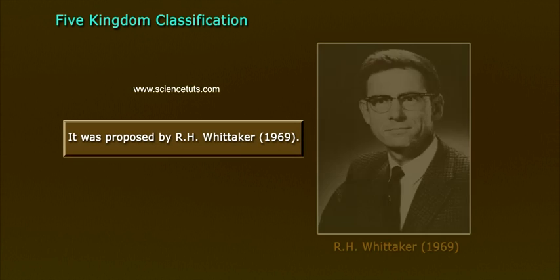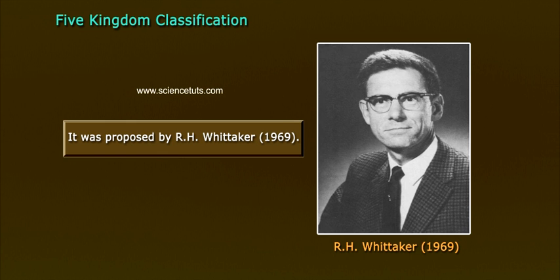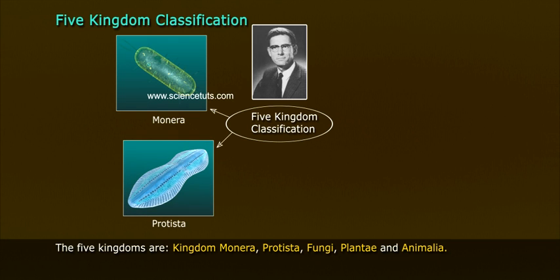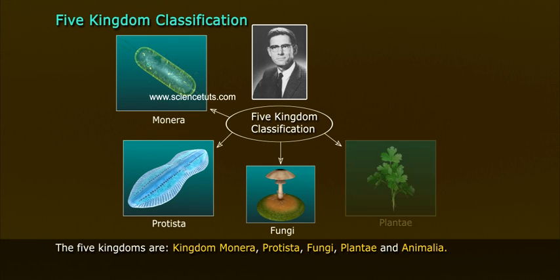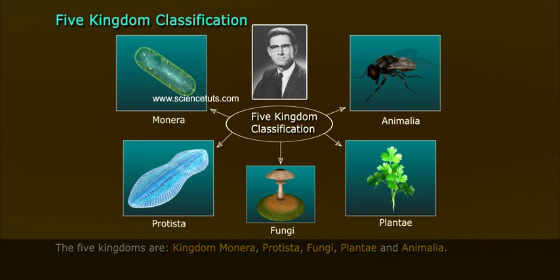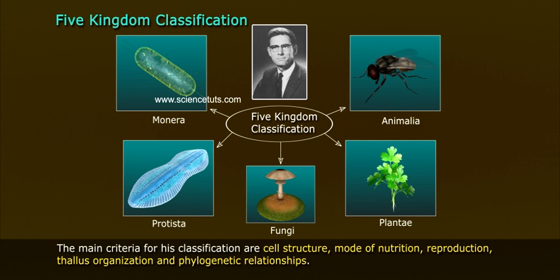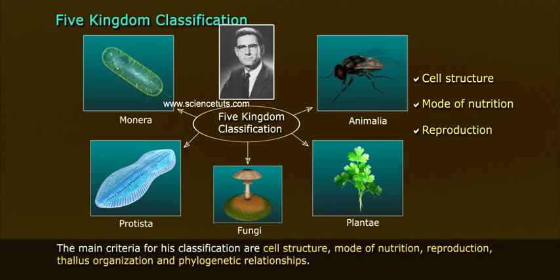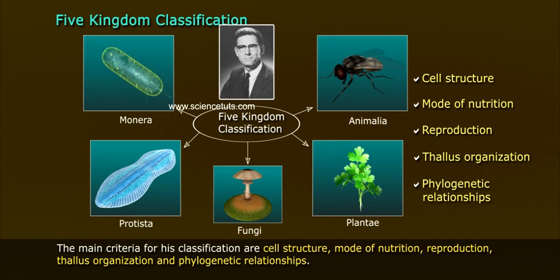The 5 Kingdom Classification was proposed by R.H. Whittaker. The five kingdoms are Kingdom Monera, Protista, Fungi, Plantae, and Animalia. The main criteria for his classification are cell structure, mode of nutrition, reproduction, thallus organization, and phylogenetic relationships.